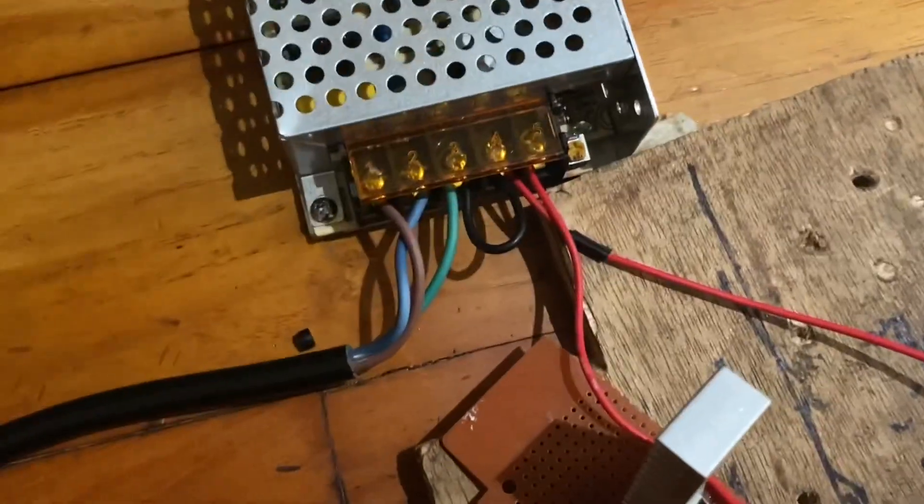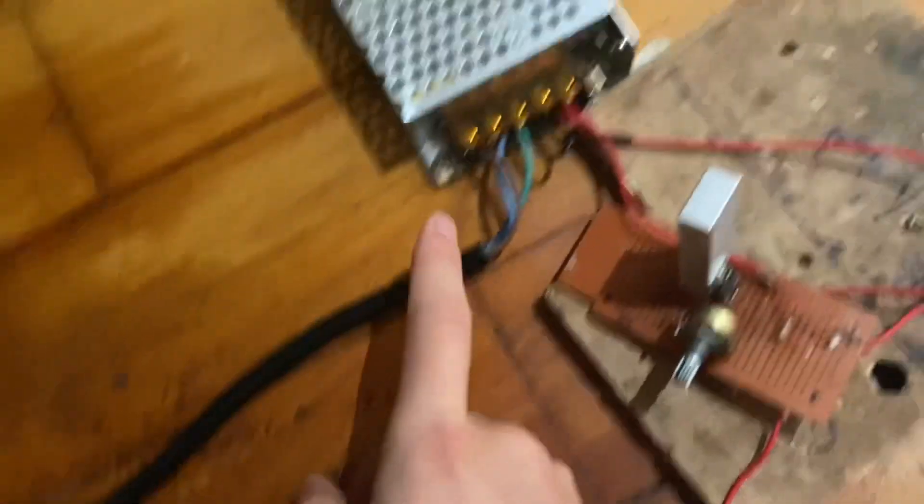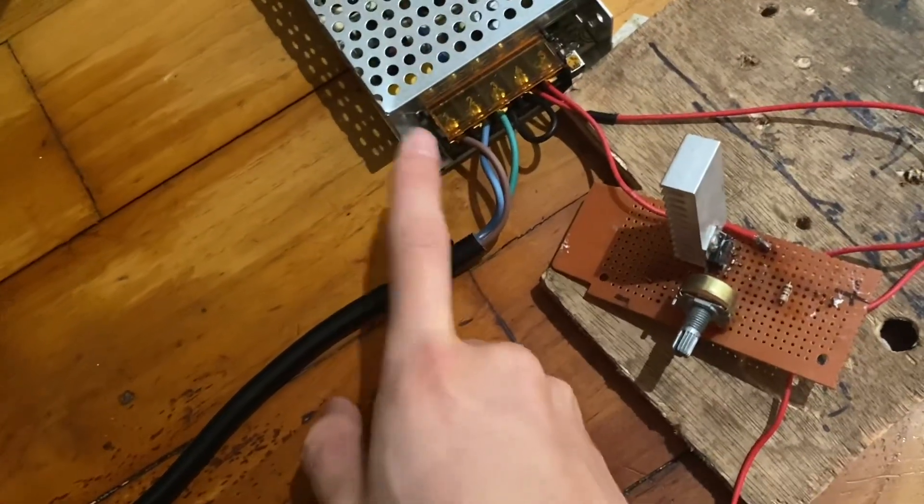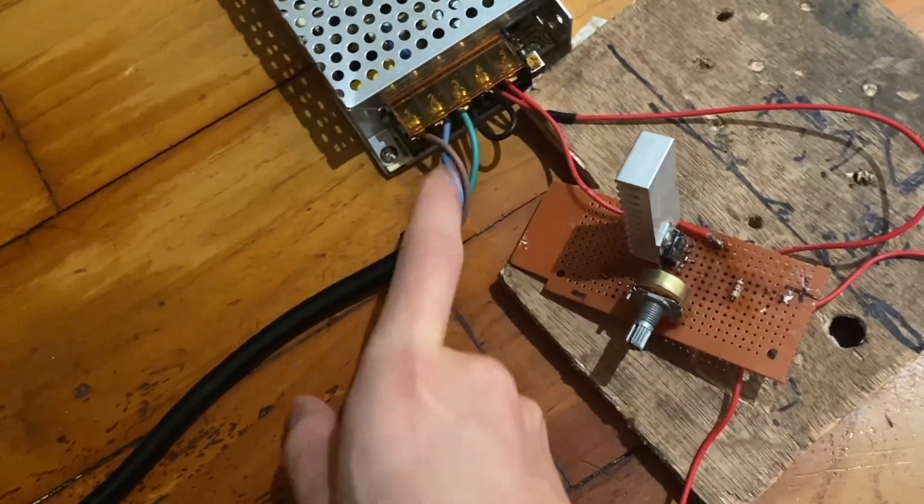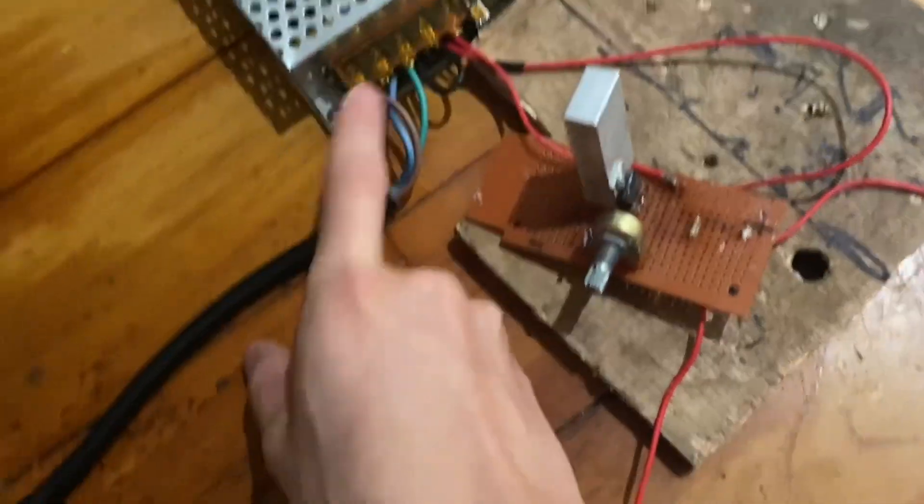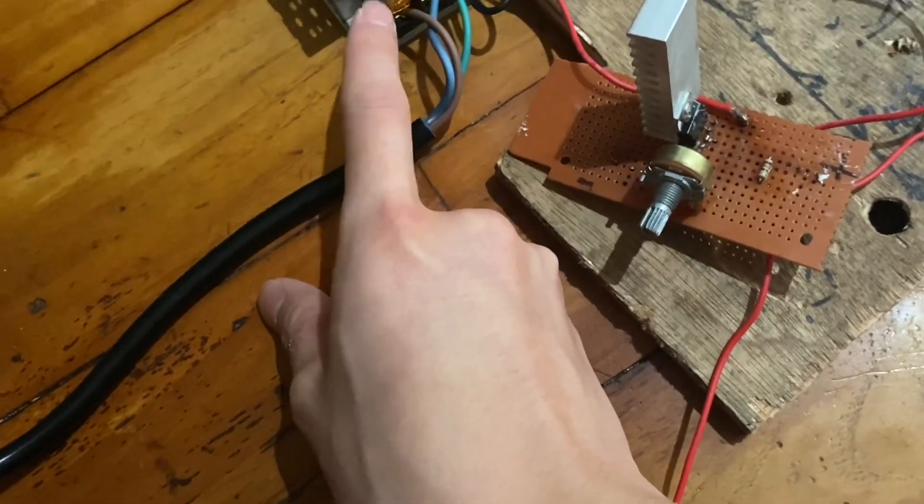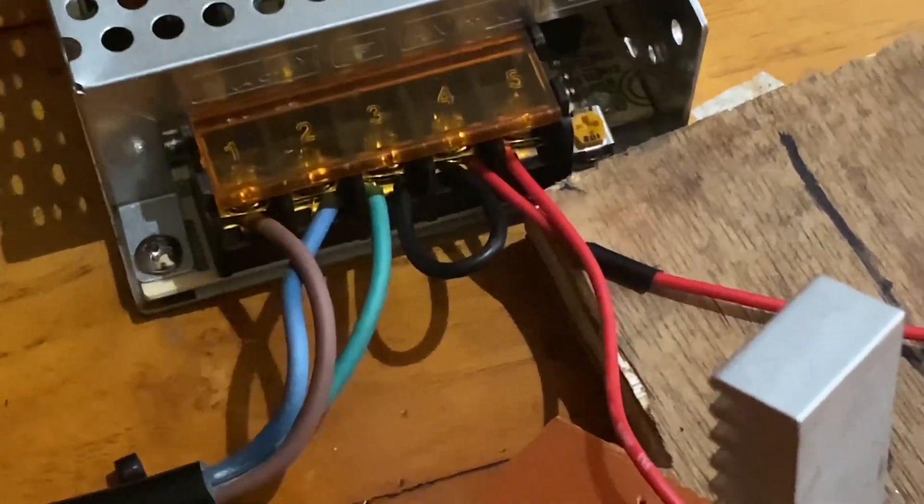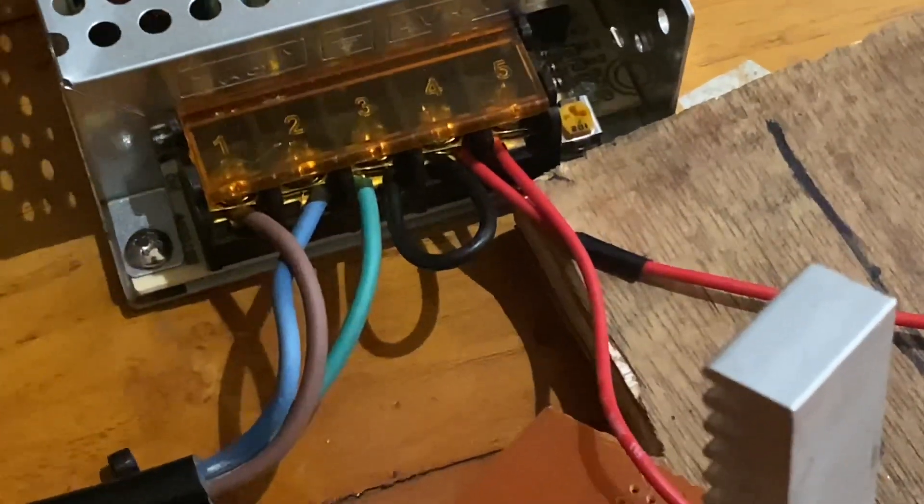You need to search up the colors, but for me the green cable is ground and I think brown is live and blue is neutral. You need to connect your high voltage and low voltage negative to ground.